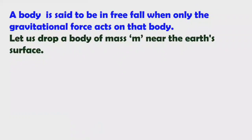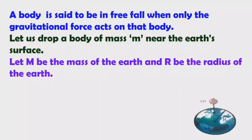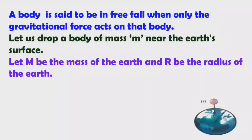Let us drop a body of mass small m near the earth's surface. Let capital M be the mass of the earth and capital R be the radius of the earth. Small m is the mass of the body. We can see an apple here — mass of the apple is small m, mass of the earth is capital M, and radius of the earth is capital R.